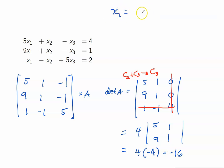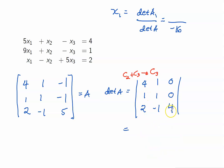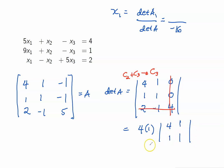Recall that x1 equals the determinant of A1 over the determinant of A, and we now know det(A) is negative 16. A1 is the matrix where the first column is replaced by the column vector B. Again, using cofactor expansion along the third column, we get 4 times positive 1 times the determinant of the 2×2 matrix with entries 4, 1, 1, 1. So we get 4 times 4 minus 1, which is 3, giving 12. Therefore, x1 is 12 over negative 16, or negative 3/4.